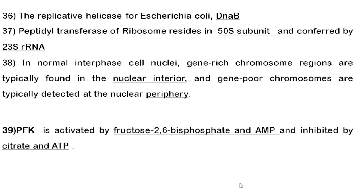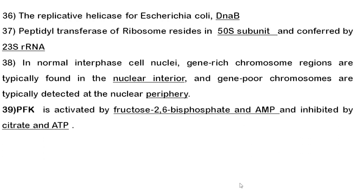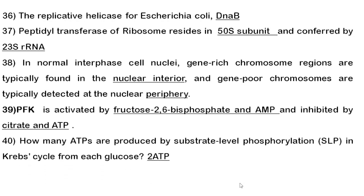Thirty-ninth question: phosphofructokinase (PFK), an important regulatory enzyme in glycolysis, is activated by fructose-2,6-bisphosphate and AMP, and is inhibited by citrate and ATP. Fortieth question: how many ATPs are produced by substrate-level phosphorylation in the Krebs cycle from each glucose molecule? Two ATPs are produced.